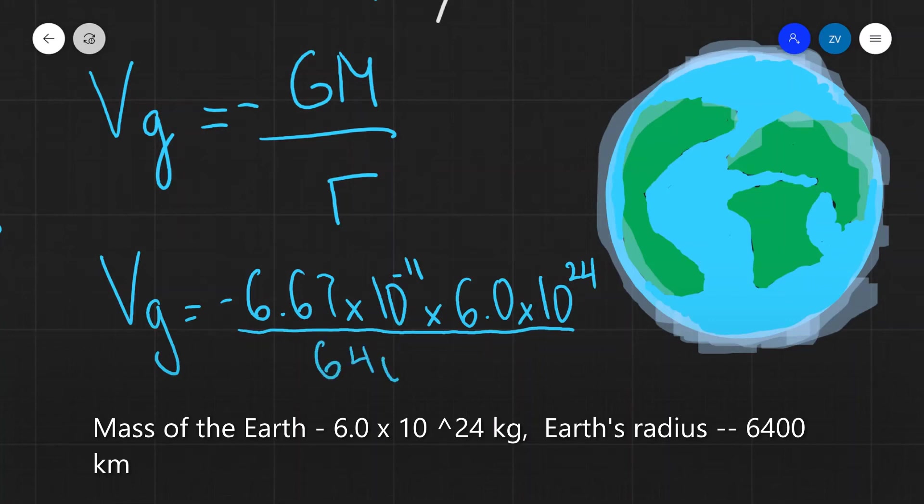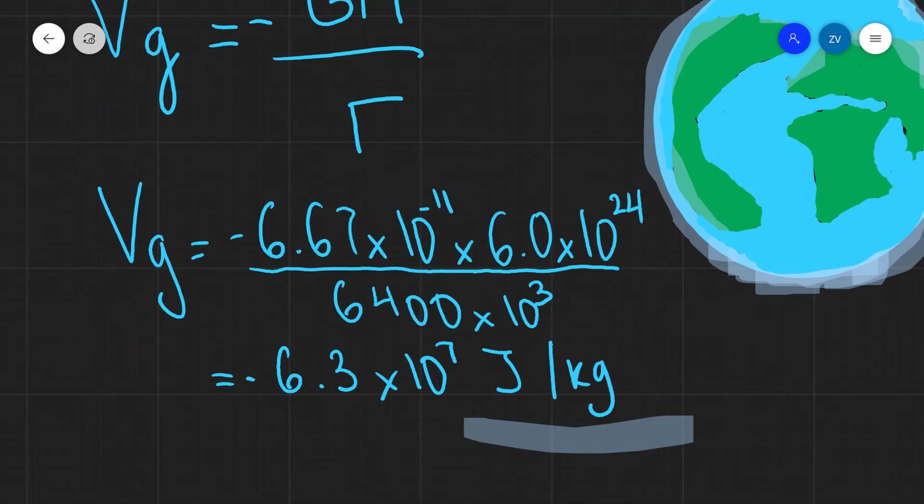6,400 times 10 to the power of 3. And if we plug this into a scientific calculator, we're going to get minus 6.3 times 10 to the power of 7 joules per coulomb. Notice that the unit for the gravitational potential is a joule per coulomb.